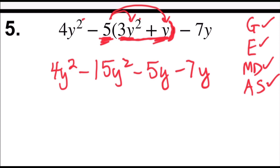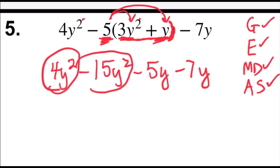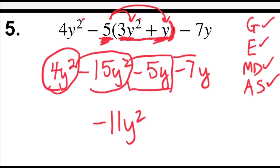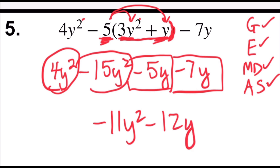Last, adding and subtracting, which algebraically is combining like terms. I have 4y squared and negative 15y squared — they're both named y squared. When I combine them, 4 minus 15 is negative 11y squared. I also have like terms with the y's: negative 5y and negative 7y is negative 12y. And so my answer is negative 11y squared minus 12y.